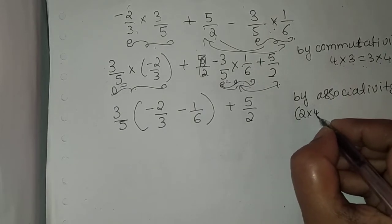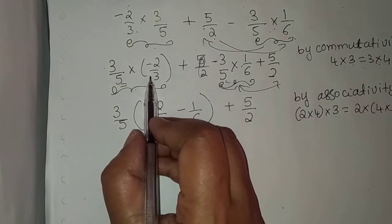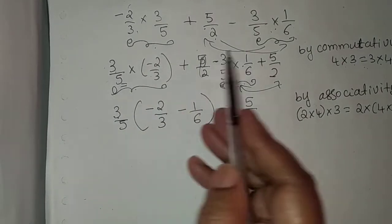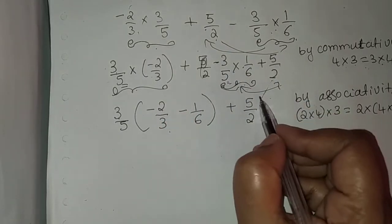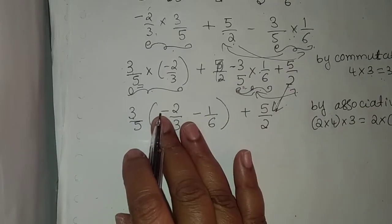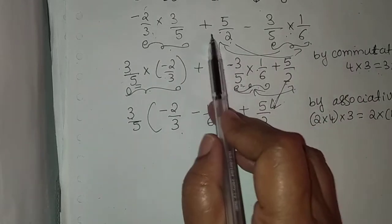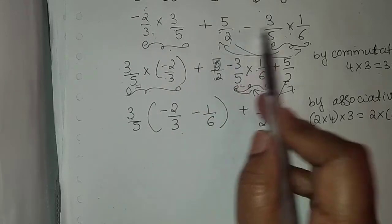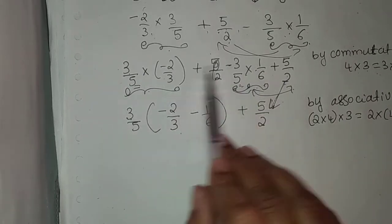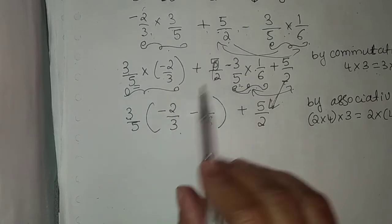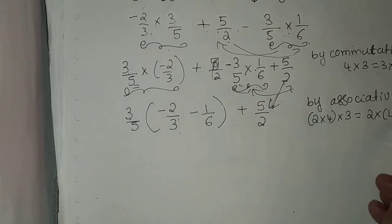What is associativity? 2 × 4 × 3 can be written as 2 × (4 × 3). That is what we used here — 3/5 is taken common, and 2/3 and 1/6 are remaining, with 5/2 remaining as it is. We grouped these two and interchanged using the commutative property, then this group is interchanged. Then 3/5 is common in both cases and we took it outside. This is by the associativity property.